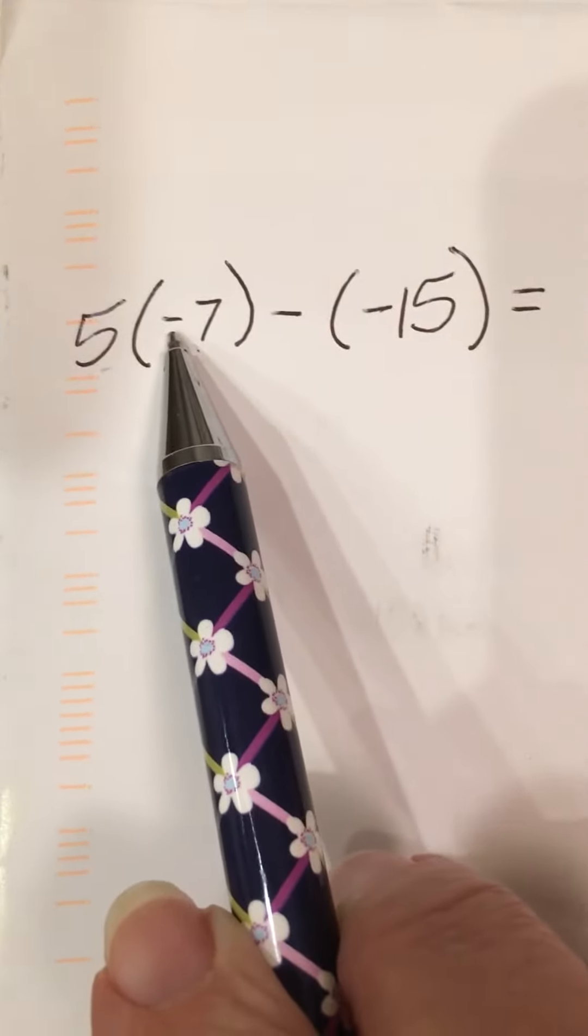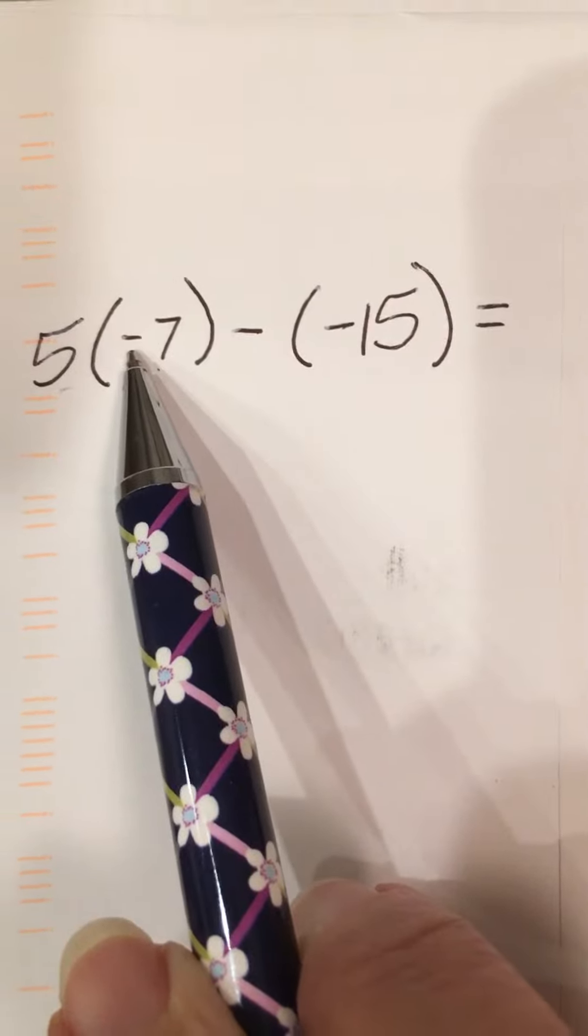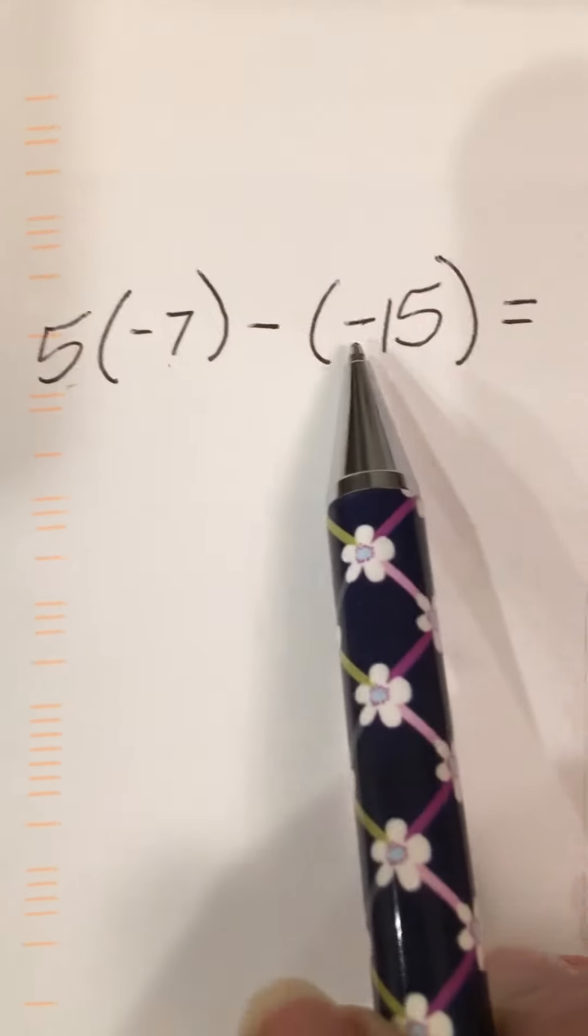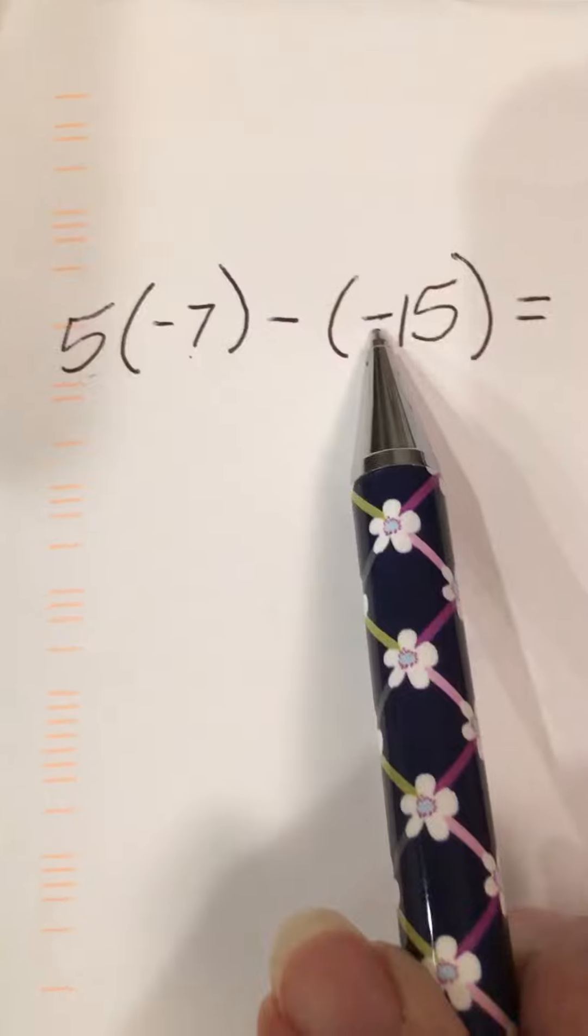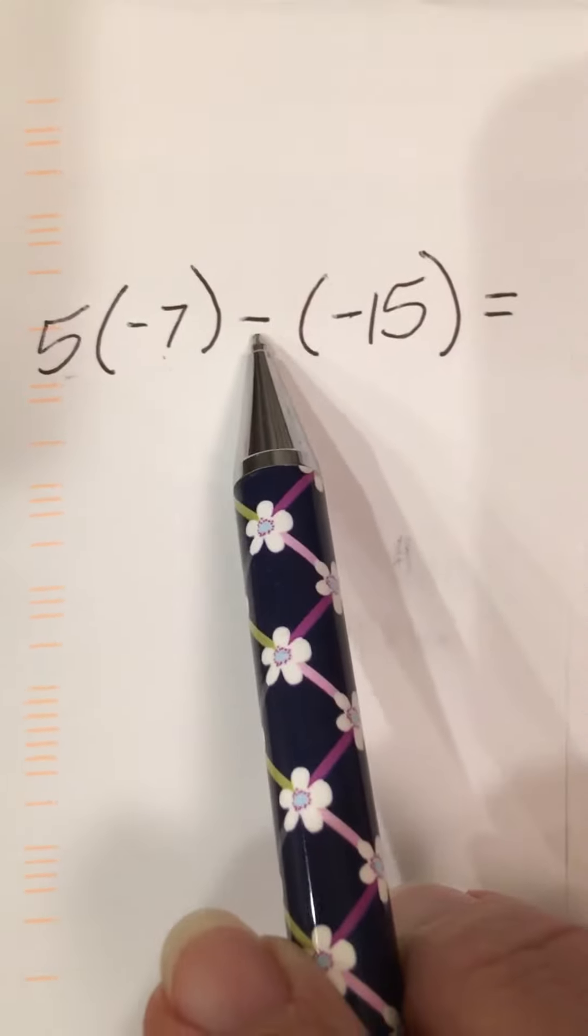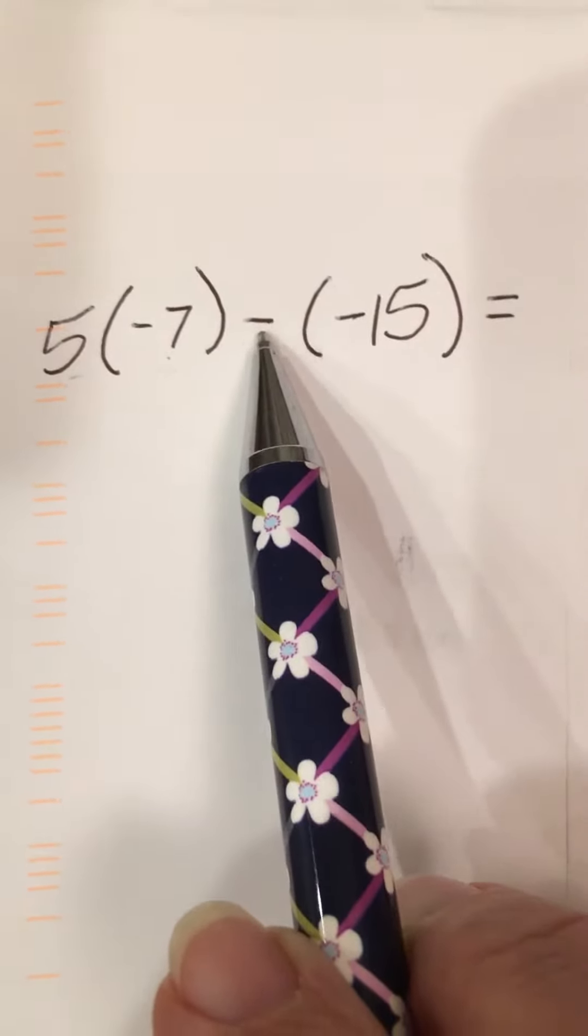This right here is a negative sign. It's not subtraction, it's a negative. Also here, that's a negative sign. It's not subtraction. The only subtraction in this problem is right here.